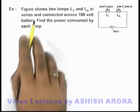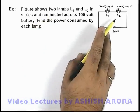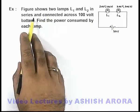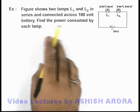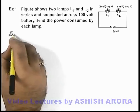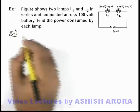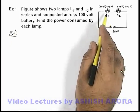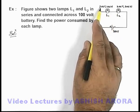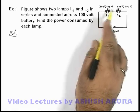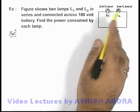In this example, the figure shows two lamps L1 and L2 in series combination, and these are connected across a 100 volt battery. We are required to find the power consumed by each lamp. We can also see that lamp ratings are given. Each lamp, when operated individually on 200 volts, consumes 100 watt and 200 watt power respectively.